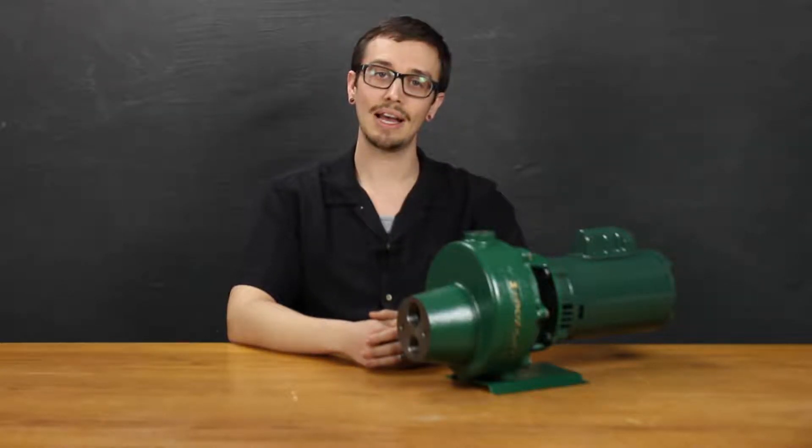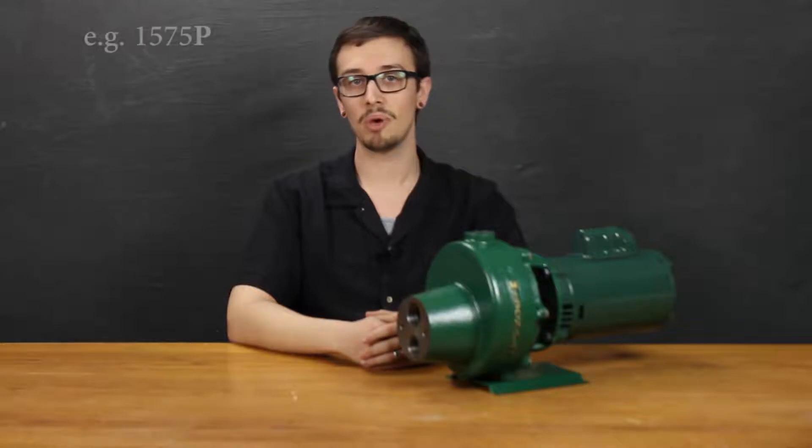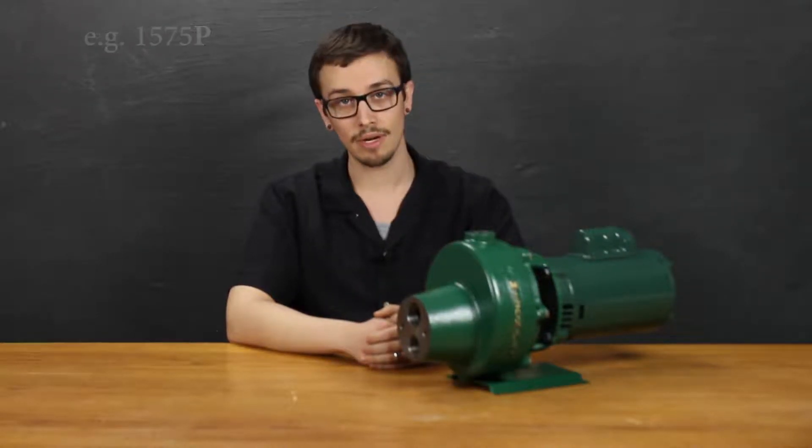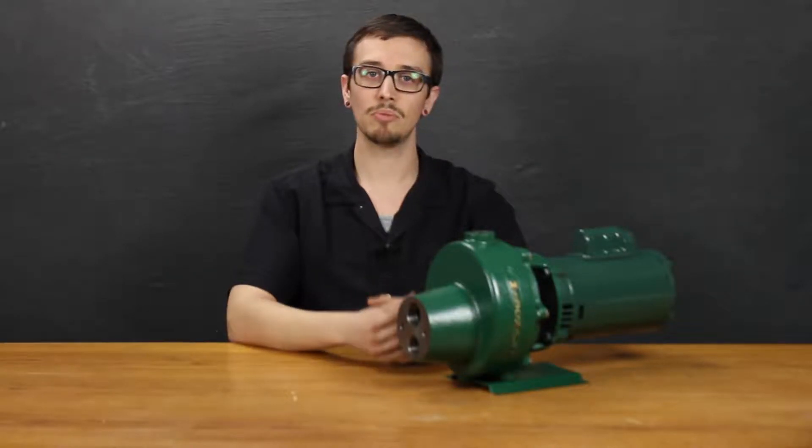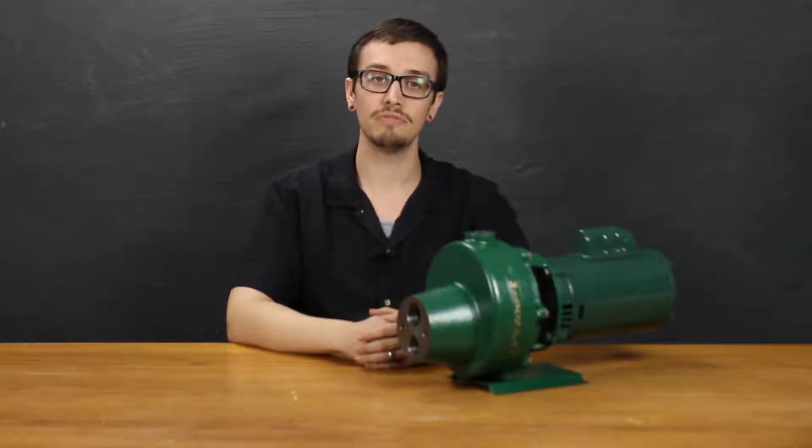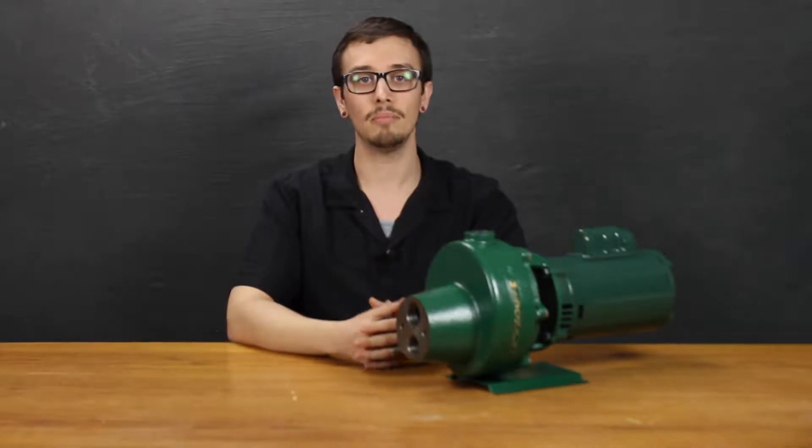The plastic impeller or thermoplastic impeller is signified by a P in the model number when ordering. Now the diffuser on this pump is a precision machined cast iron diffuser for the greatest possible efficiency of this particular pump.